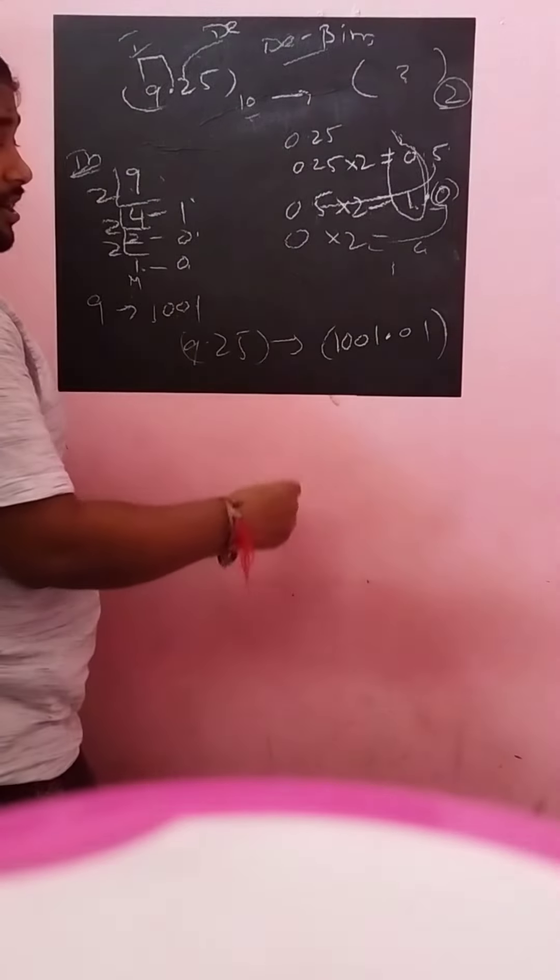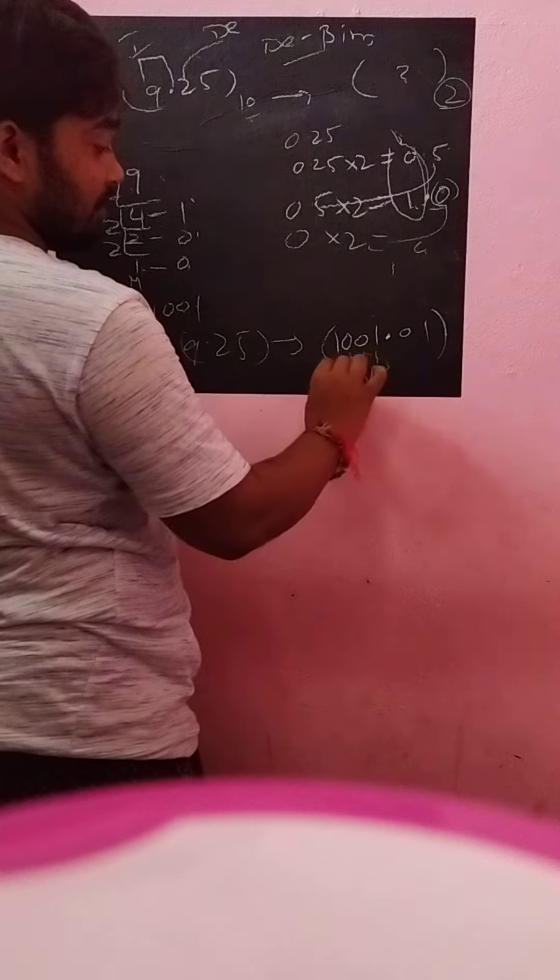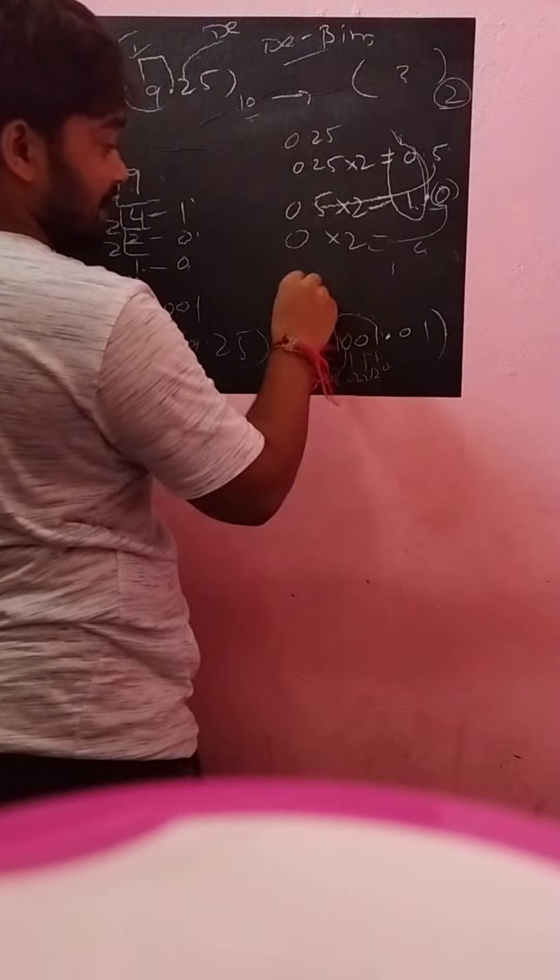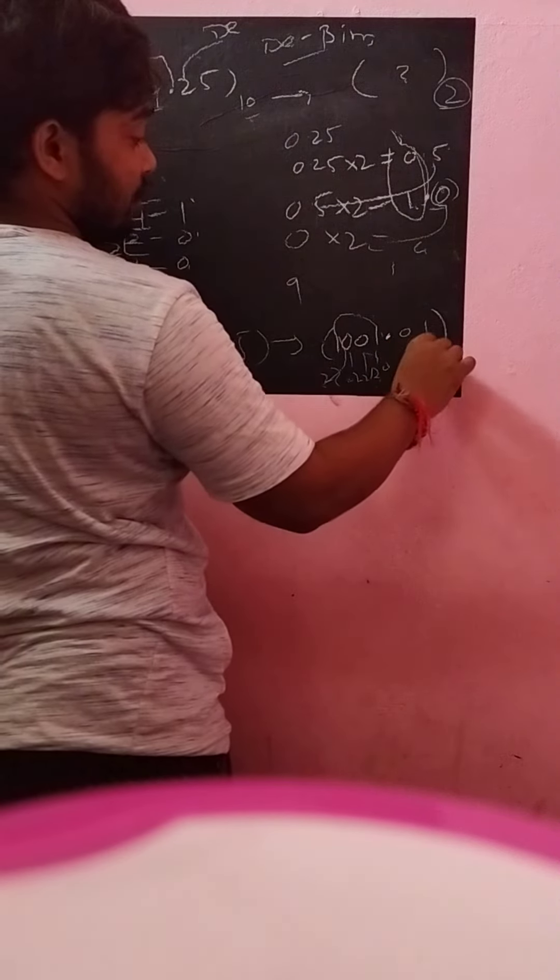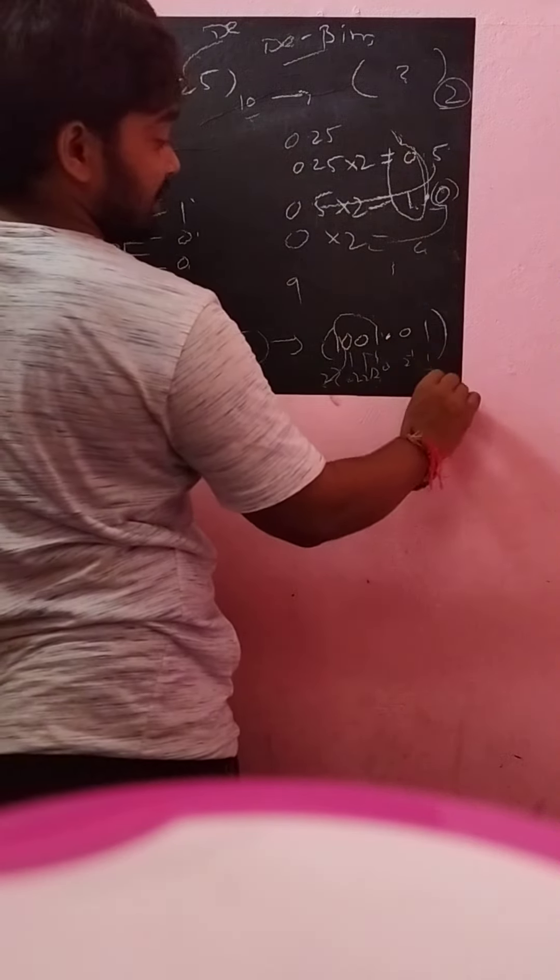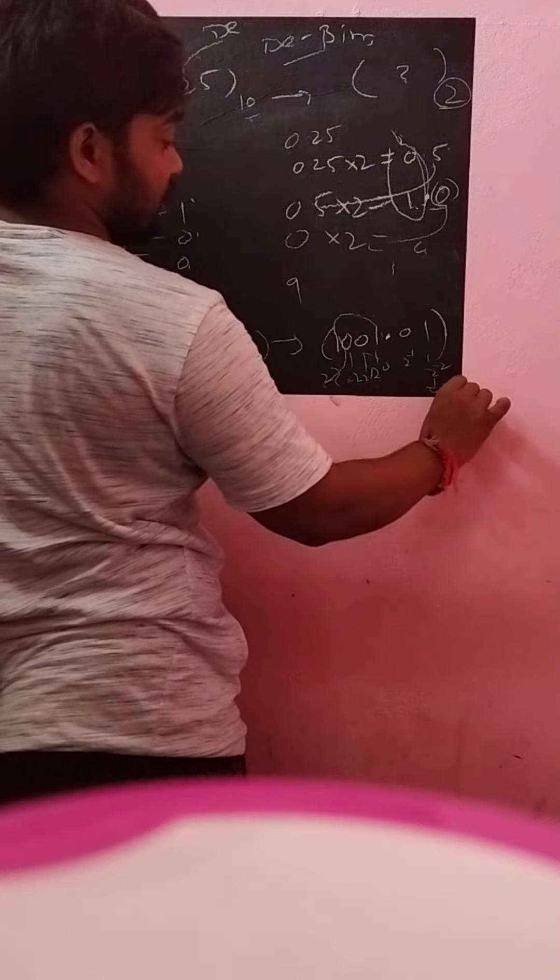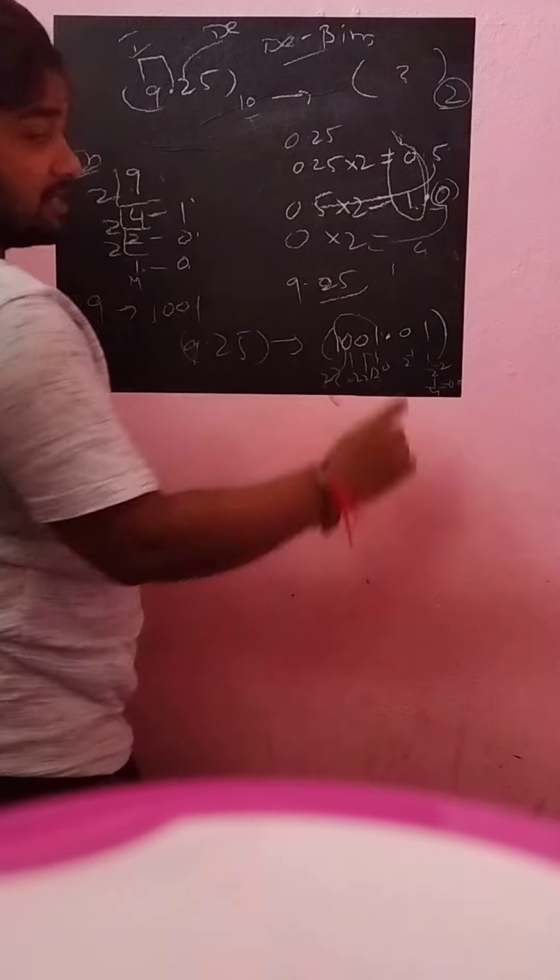Let's check. 1 times 2³ equals 8, plus 1 times 2⁰ equals 1, gives us 9. Plus 0 times 2⁻¹ equals 0. Plus 1 times 2⁻², which is 1/4, equals 0.25. The result is 9.25. This is the answer.